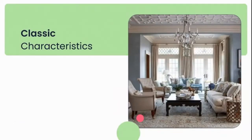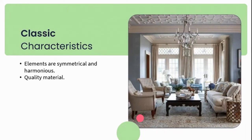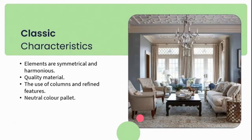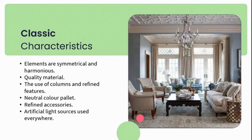Let's jump into some of the characteristics of a classic space. Elements are arranged in a symmetrical and harmonious manner — the two key factors in creating a balanced and welcoming space. We see the use of good quality materials such as oak, cherry, beechwood, mahogany, bronzes, and marble. There is a strong use of columns and wall panel detailing, very reminiscent of this style. The color palette is very neutral — base colors of light and neutral tones — aimed at highlighting noble materials such as marble or quality wood. In the classic style, we see the use of delicate and refined accessories. And one of my favorite characteristics: the use of artificial light sources — crystal chandeliers, floor lamps, direct lighting, and mood lighting, which all contribute to creating that welcoming atmosphere.